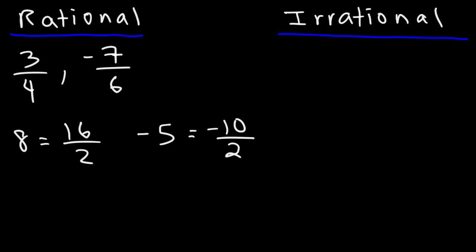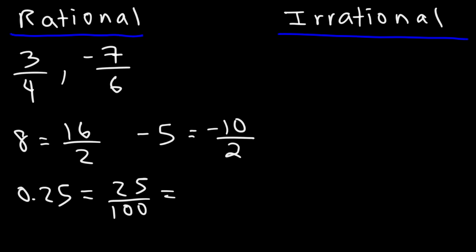Now what about decimal numbers? For instance, 0.25 — is that rational or irrational? Can we write this as a ratio of two integers? 0.25 is the same as 25 divided by 100, and if you divide the top and the bottom number by 25, this is the same as 1 over 4. So if you have a decimal number that is finite — that comes to an end, like 0.25 — that's a rational number.